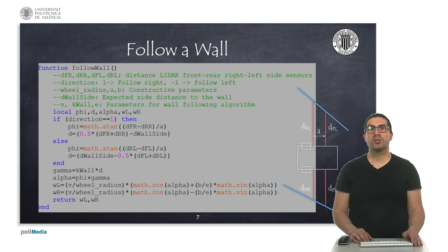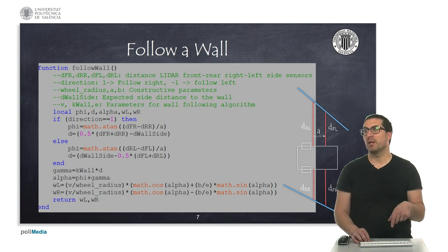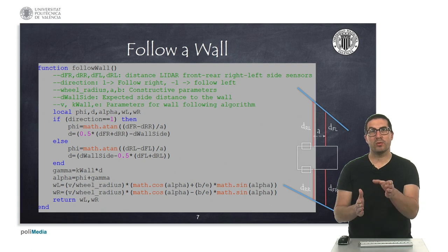We also need to provide some constructive parameters of the robot, such as the wheel radius and the wheel base, and also the expected lateral distance to be measured. This is something we can precompute. We also need to provide the velocities and the gain and the distance of the off-center kinematic control. That will allow this wall-following algorithm to make the robot stay just in the middle of the cell.